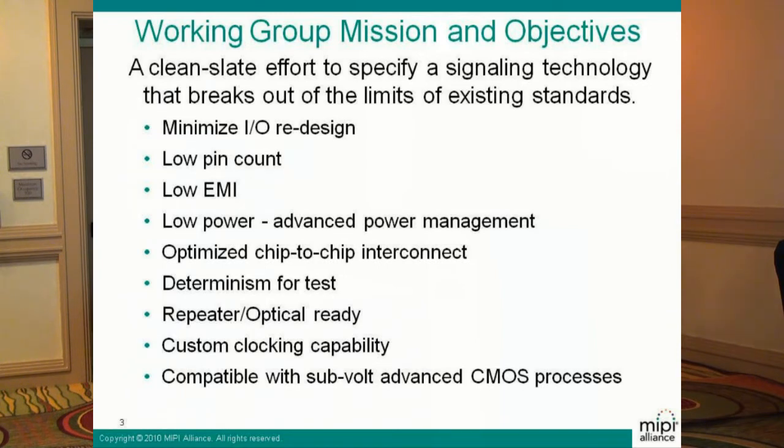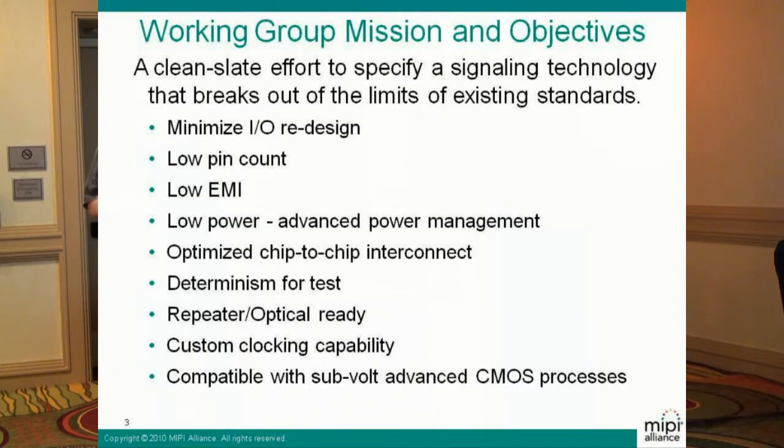We already talked about minimizing I/O redesign. Also, radiation — you may have as many as five different types of radio receivers in one of these small devices, so you don't want an interface that generates a lot of noise. Again, you have a fixed resource in terms of the amount of power available on the phone, so you want to ensure your interface does not gratuitously burn power. That's different from other standards, which are frequently built for platforms where conserving power is not the first priority. But when you have a battery and a limited resource, that becomes very important.